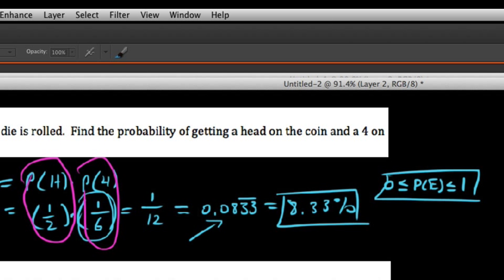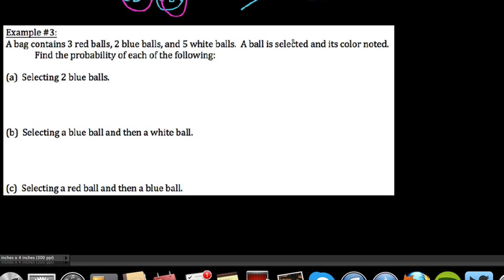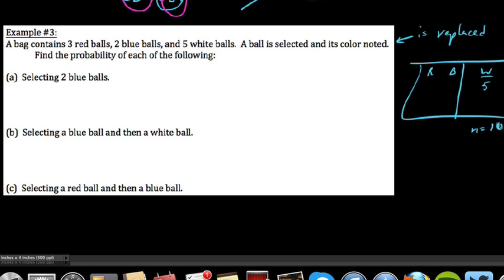So this example here: a bag contains three red balls, two blue balls, five white balls. A ball is selected and its color is noted. Find the probability of each of the following things. A ball is selected, its color noted, and then is replaced. This is kind of an important thing because it doesn't affect the overall sample space. If we draw out the sample space here, we have red, blue, and white. White had five out of these ten, N equals ten. Two blue and three red. So here's our sample space, drawn a little bit to scale. These are all mutually exclusive events since you can't be a red and a blue ball.